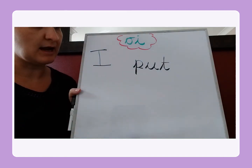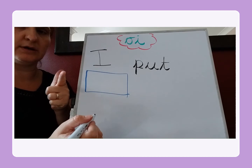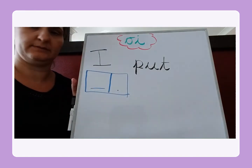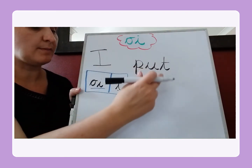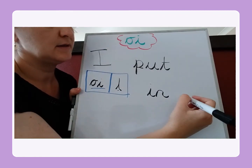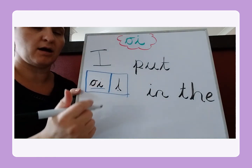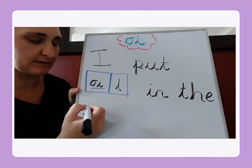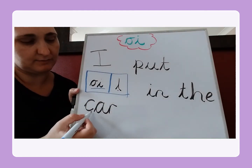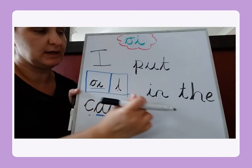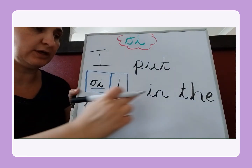Oil has the OI sound. Oil. How many sounds can you hear in oil? I can hear two. What's the first sound? It's OI. Oil. I put oil in. The — there's a tricky word we just need to know: T-H-E. In the car. K-ar. The AR is made of the A and the R. K-ar. I put oil in the car. And what do we need at the end of our sentence? We need a full stop. Let's read it one more time: I put oil in the car.